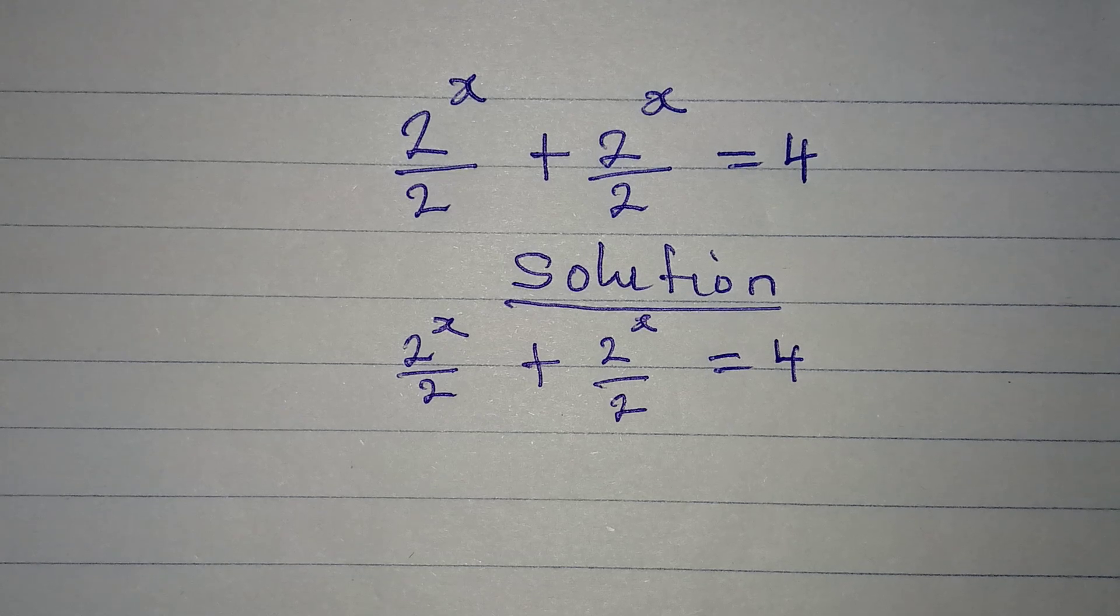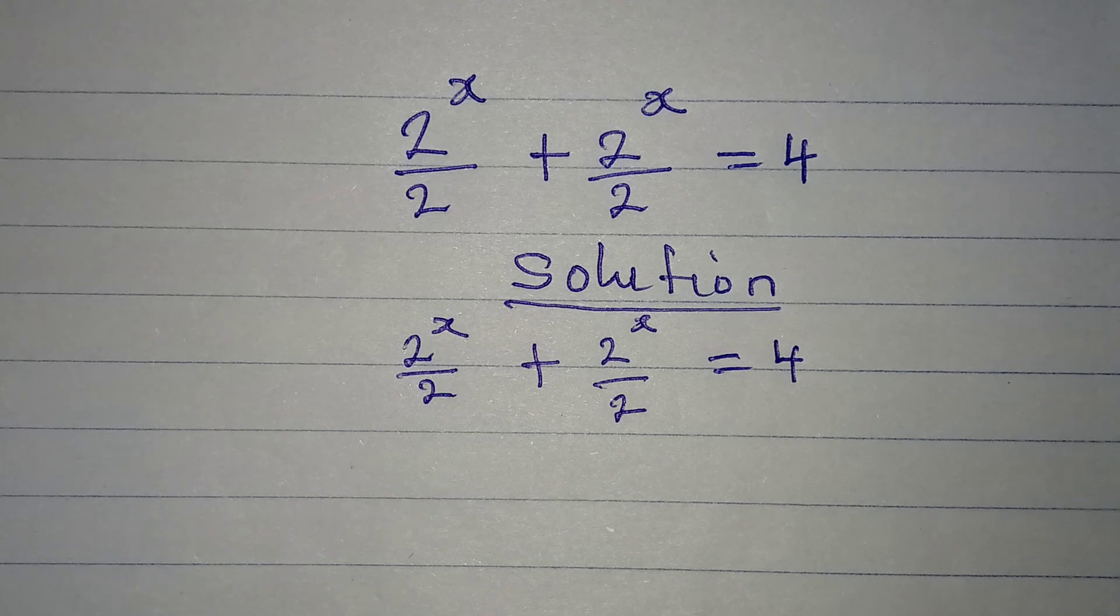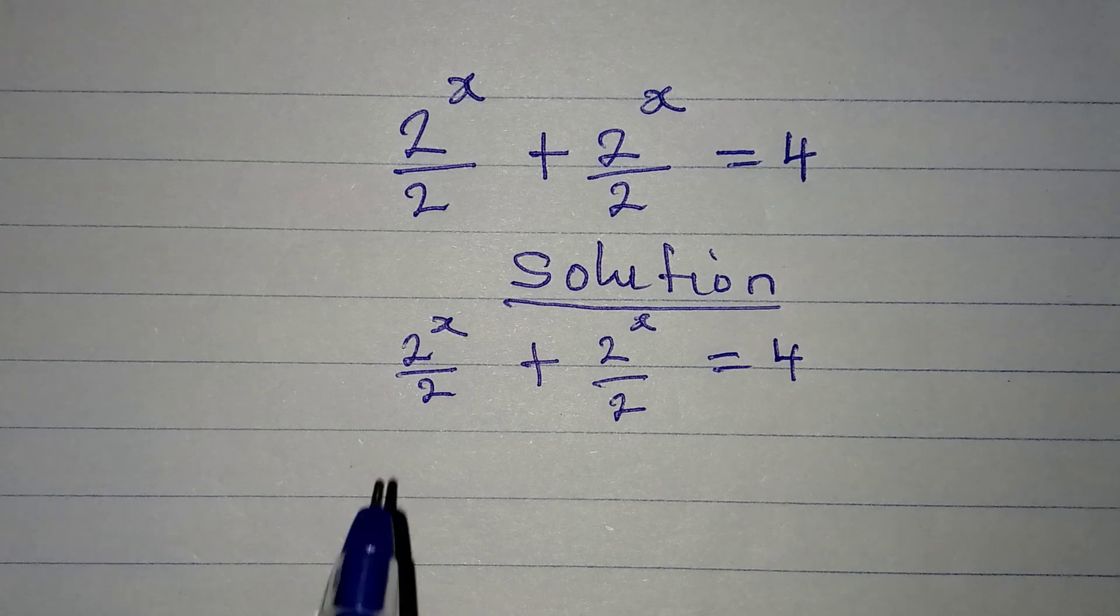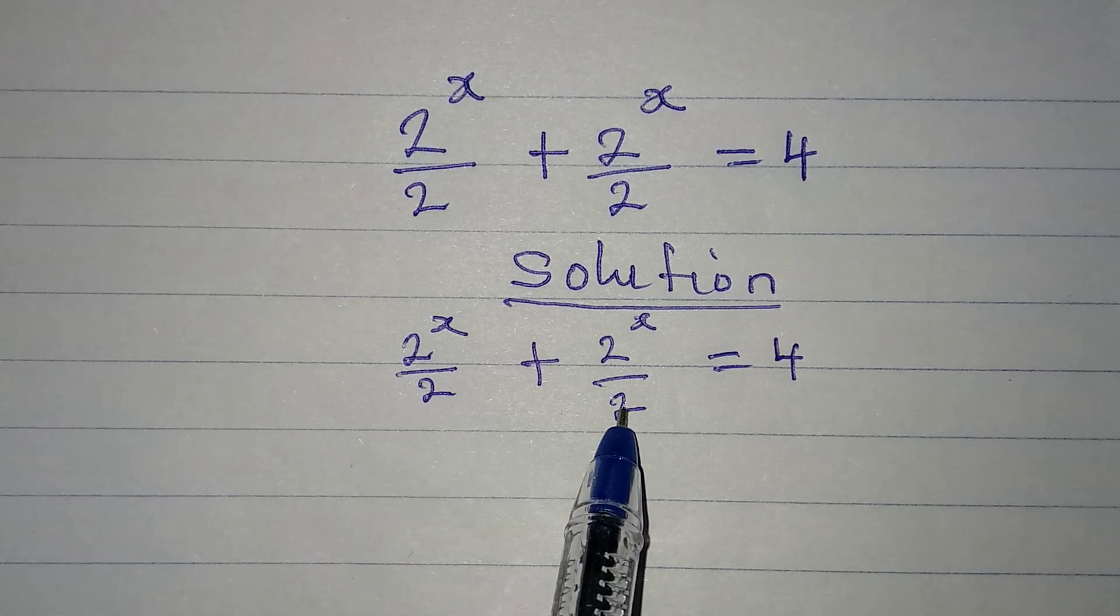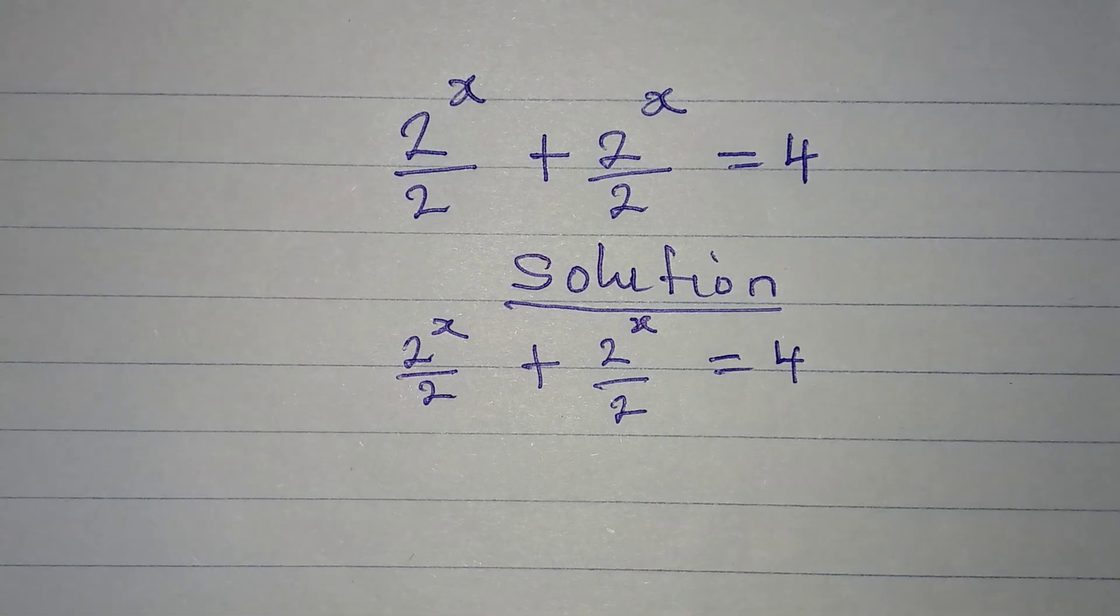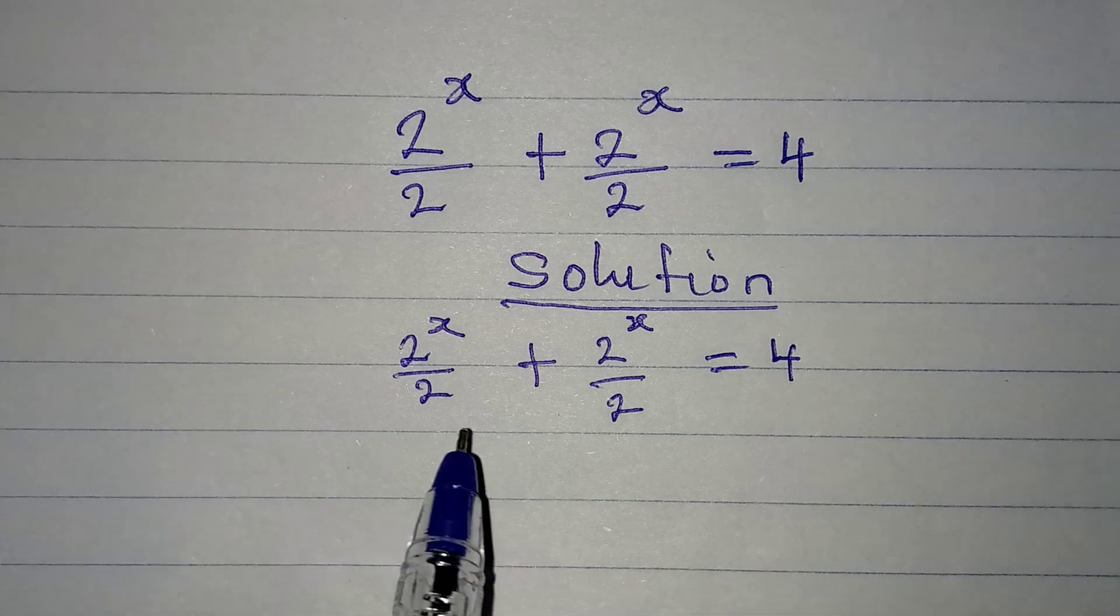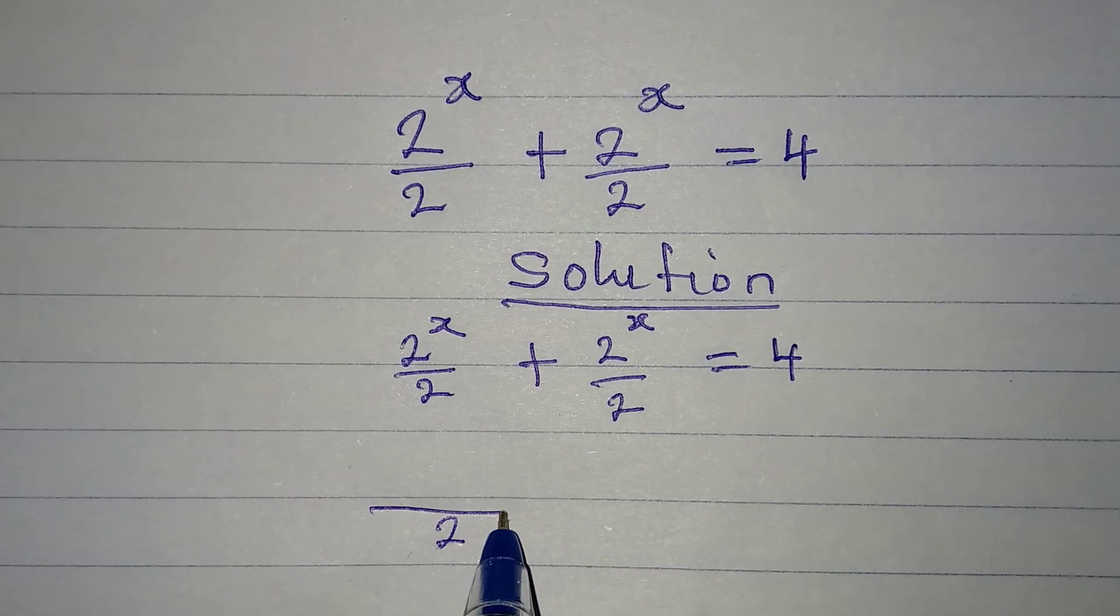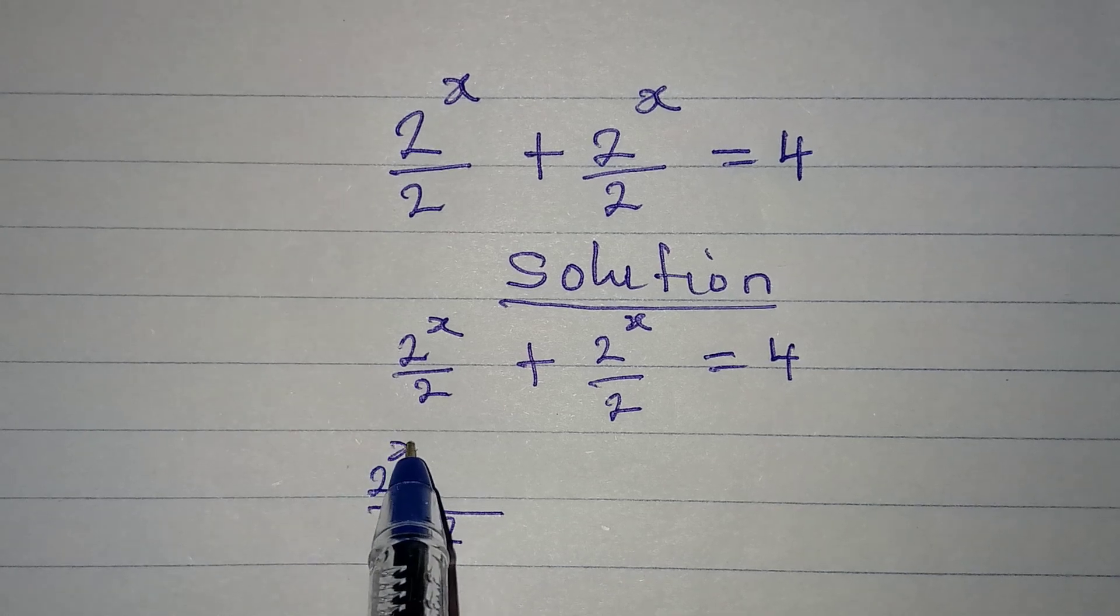You cannot cancel these terms because they're carrying an exponent. So what we'll do is find the LCM, which will be 2, and then I add 2^x and 2^x.